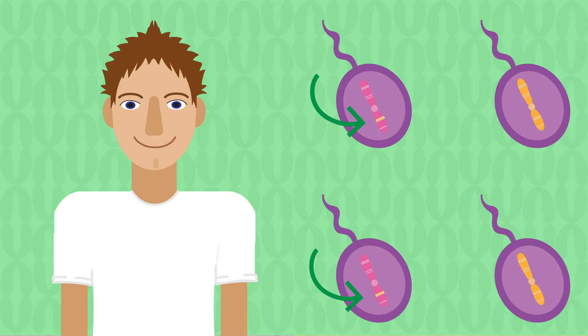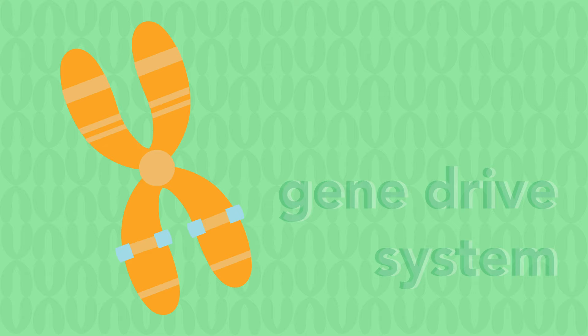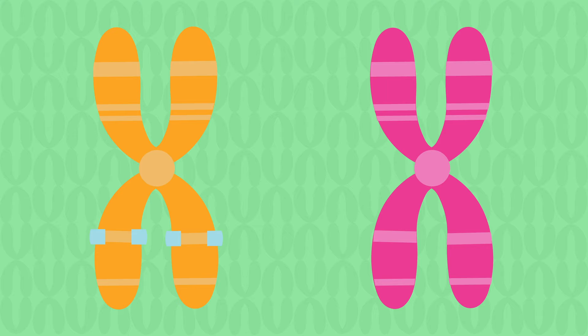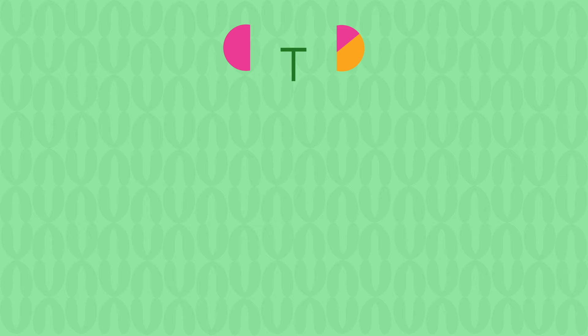This is where a gene drive system would come in handy. Gene drives, which occur in various forms, are a mechanism cells can use to promote one variant of a gene over another. In other words, they can help change a heterozygous population into a homozygous one.